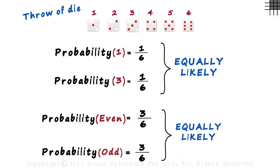It means that if we throw a dice once, the likelihood of getting an even number is the same as the likelihood of getting an odd number. Can you think of an example where two events are not equally likely? We will see that example in the next video.